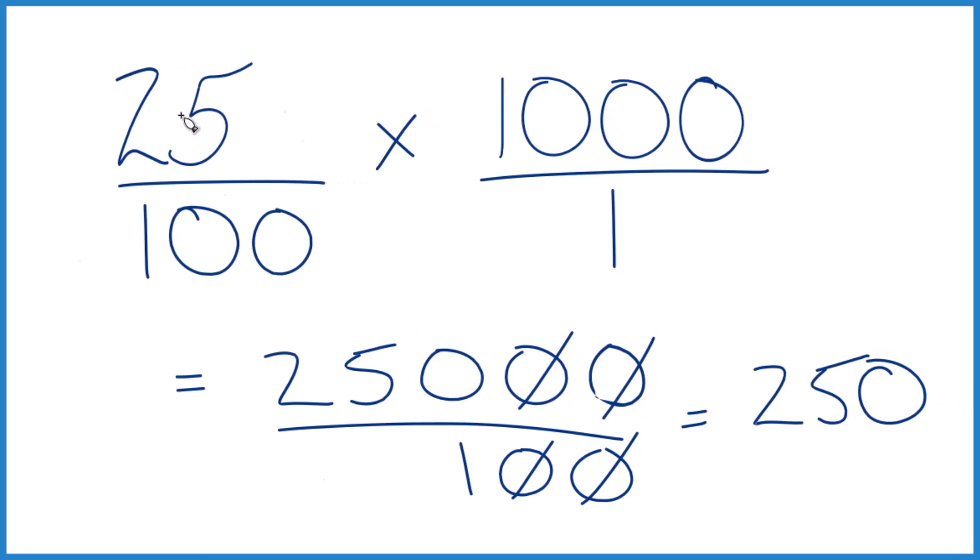You could also take 25 divided by 100. That would give you 0.25 and multiply that by 1,000, and you get 250.